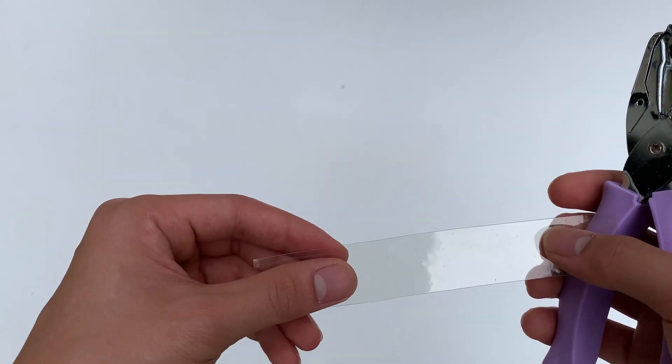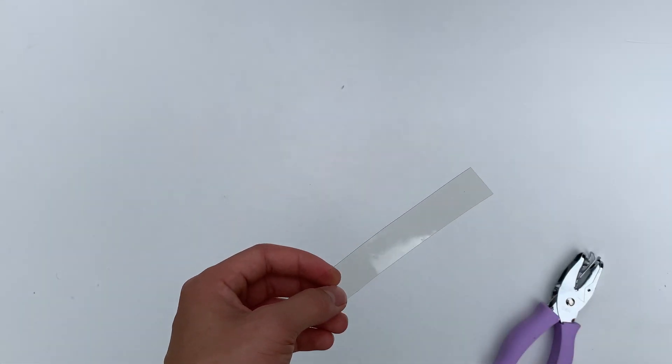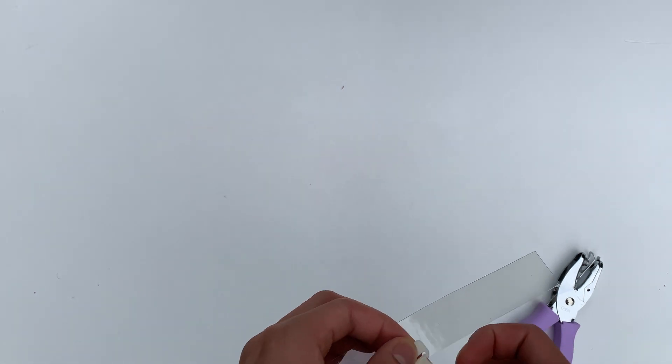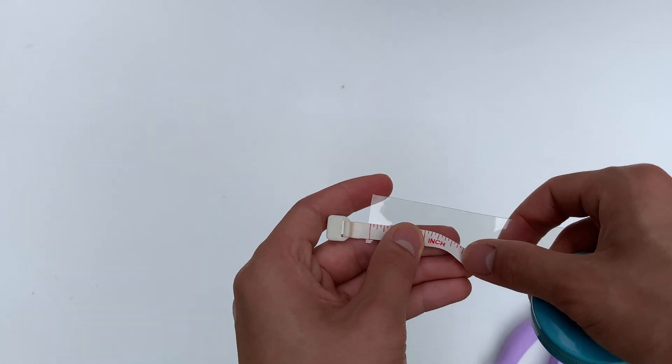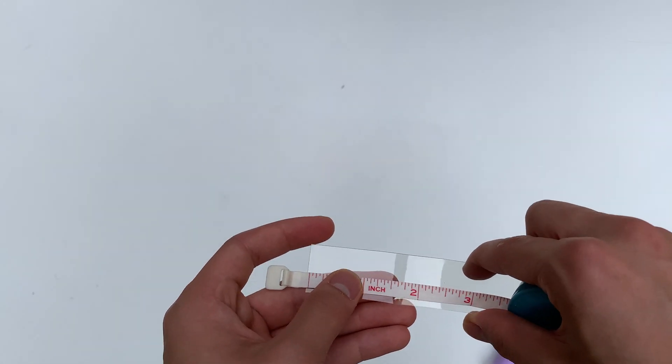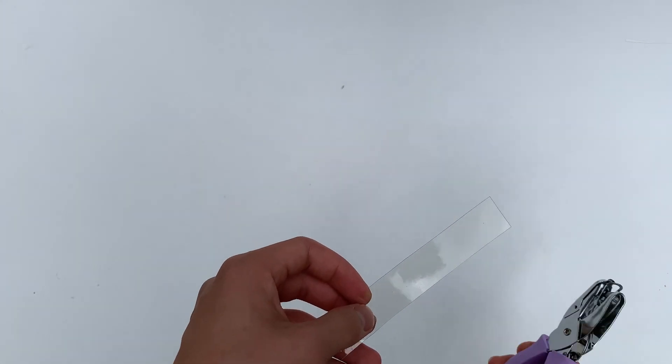Get a hole puncher if you can and punch holes along the center of the plastic strip. This is optional. The holes will make breathing only slightly easier, and it is not as important. Leave around one inch at the bottom of the plastic strip without any hole punches, because this will be in contact with your chin, and holes will be irritating even if it is on the smooth side.